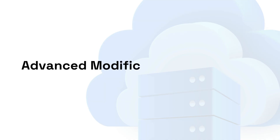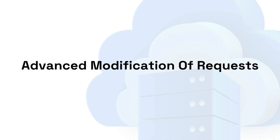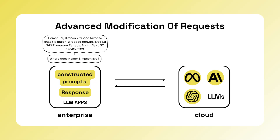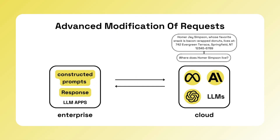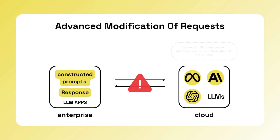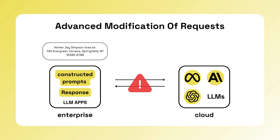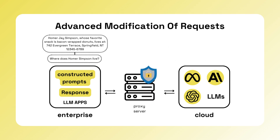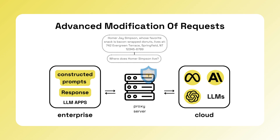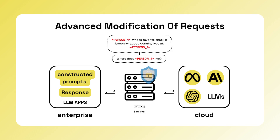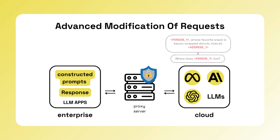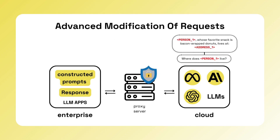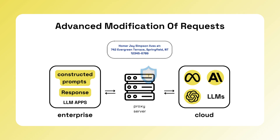Fourth, advanced modification of requests. Sometimes there might be concerns about the inputs and outputs from your AI systems, such as data leakage or irresponsible chatbot responses. By placing a gateway in the middle, you can apply logic to alter the inputs and outputs, like removing PII or serving as a final layer of guardrails.